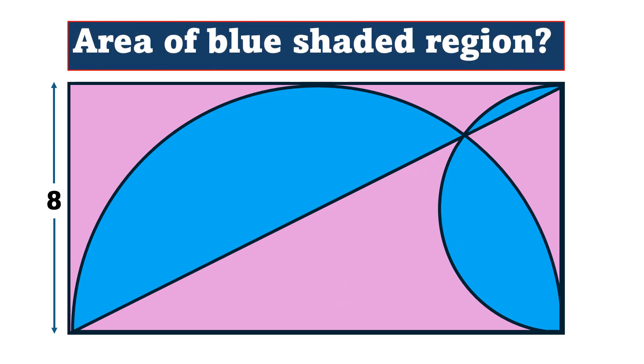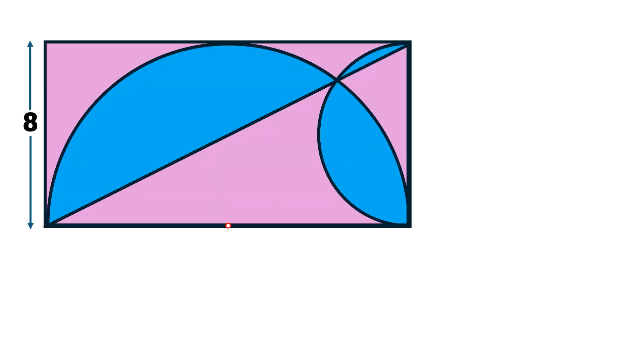Let we move toward the solution. First of all, we label the vertices of this rectangle and also label this intersecting point. We label the rectangle as ABCD and this point as E. We draw a line segment from point C to point E.